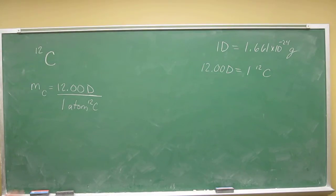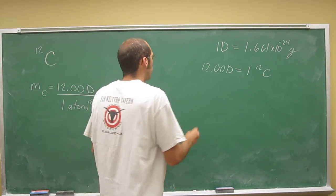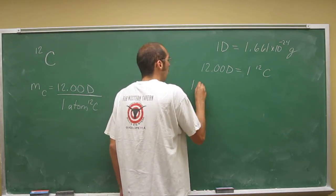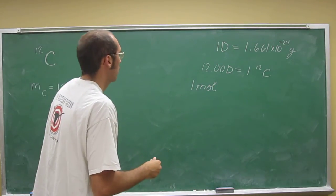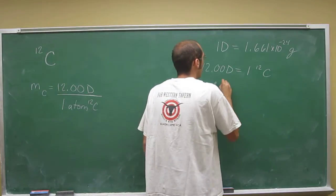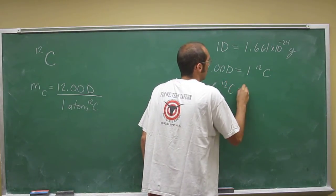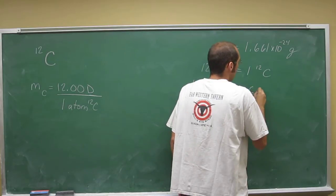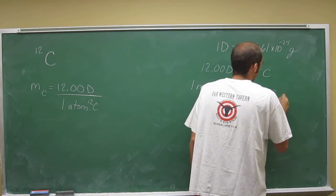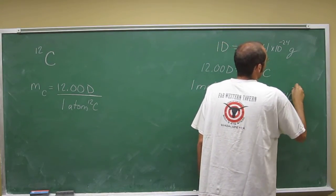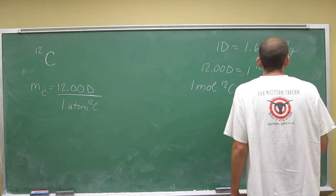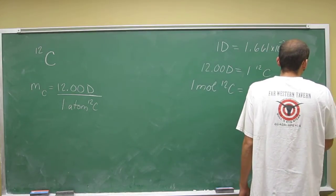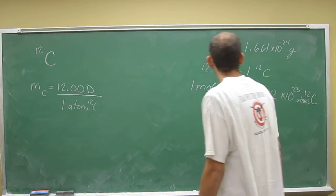And you want to figure out what a mole of atoms of carbon-12 weighs. You know, 1 mole of anything is 6.022 times 10 to the 23rd, Avogadro's number. So 1 mole of carbon-12 atoms is 6.022 times 10 to the 23rd atoms of carbon-12.